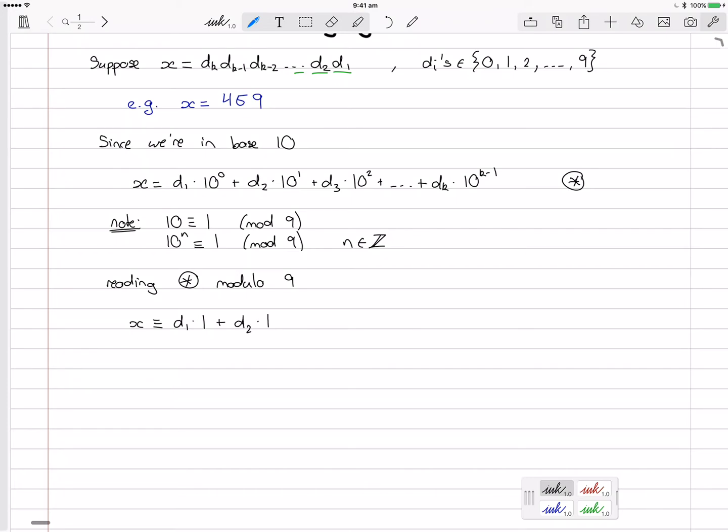And then we also said that any integer power of 10 was going to be equal to 1 mod 9. So I can continue this pattern and I can say that all these powers of 10 here will just become 1 if I'm reading this modulo 9. And so I get up to dk times 1. Of course it's good to note that we're reading this mod 9.